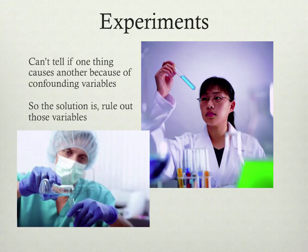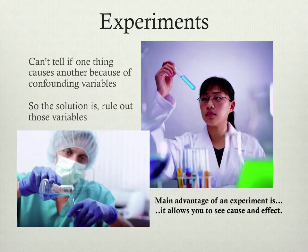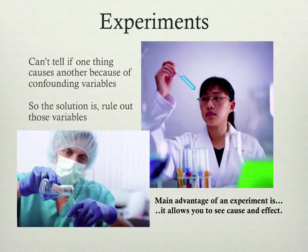If I were to ask you on a test what's the main advantage of an experiment, you should have it drilled into your head: the main advantage of an experiment is that it allows us to prove cause and effect. It's not that experiments are the only valid way to do scientific research — that's absolutely not true. You could do correlational studies, or studies of single variables, in a very scientific way. We don't always need to know cause and effect. But if we want to prove that something causes something else, we go with an experiment.